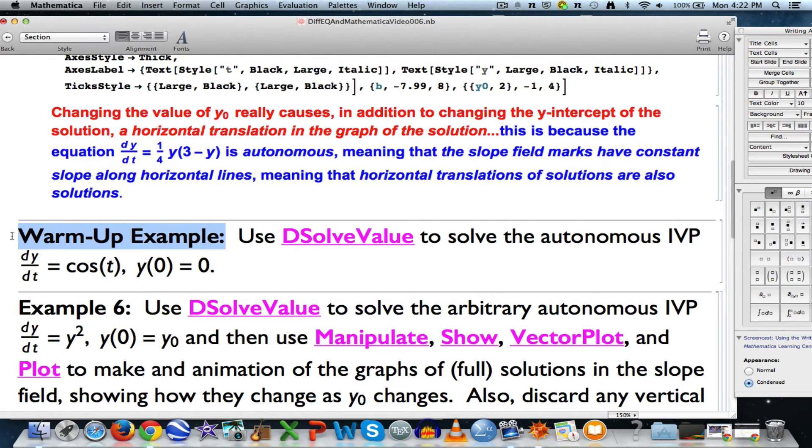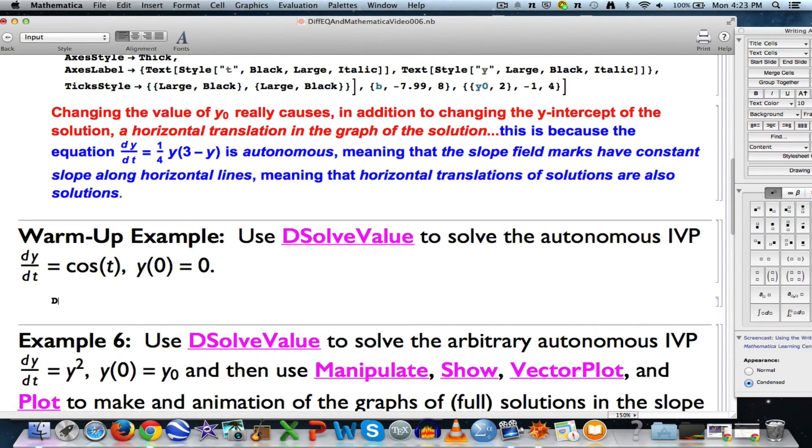In using DSolveValue, we're going to do a warm-up example. We've got this initial value problem. This is a simple example because this is a pure anti-derivative problem. You can just integrate the cosine function to find your general solution for a function whose derivative is always the cosine function. If you want the graph to go through the origin, I hope you think about that for a second and see the answer is the sine function.